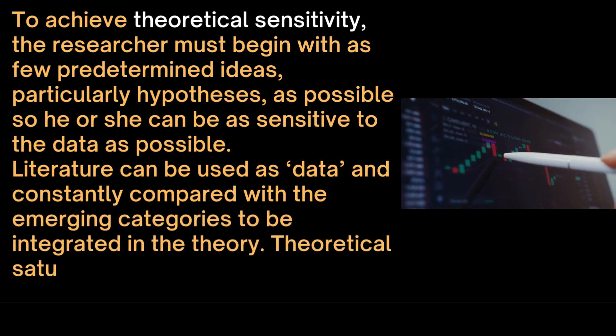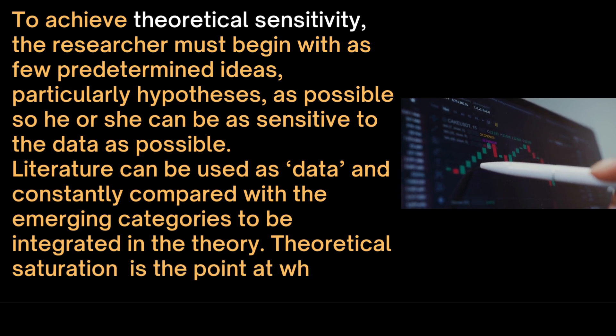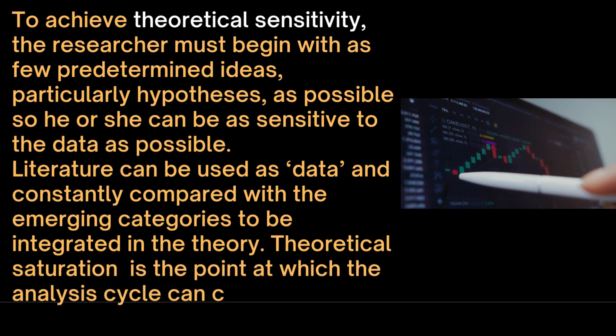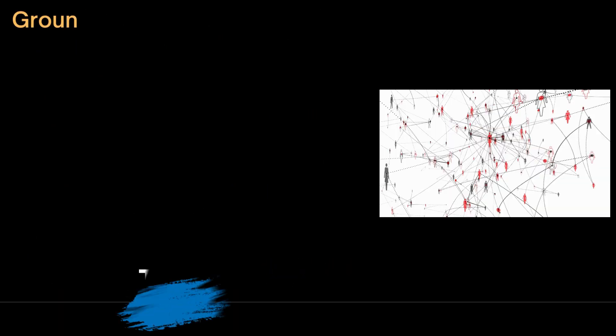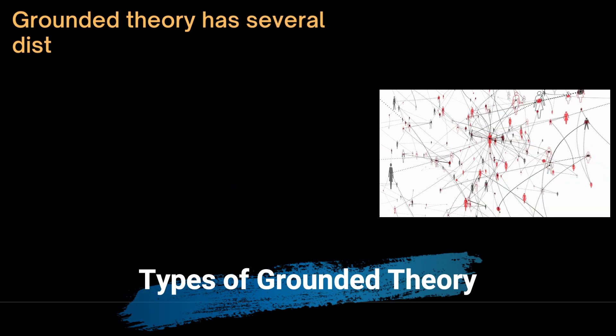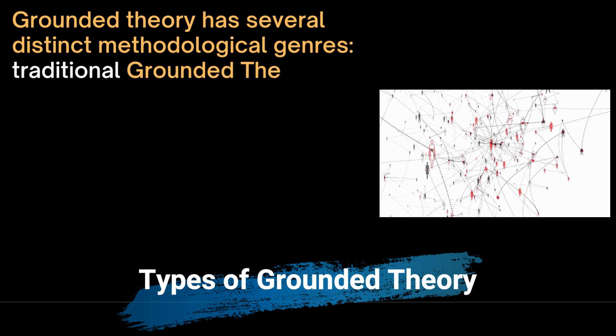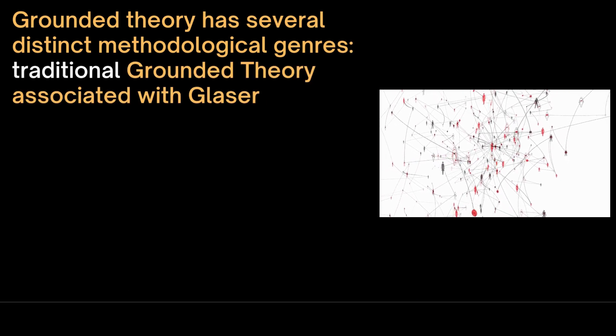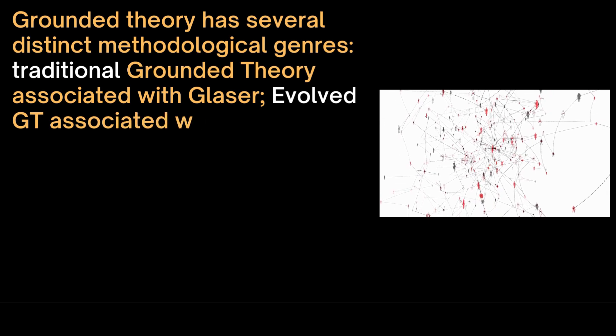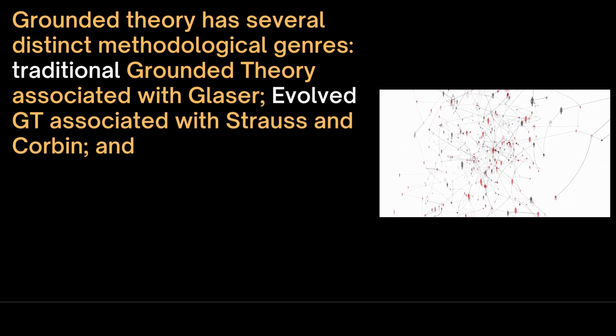Theoretical saturation is the point at which the analysis cycle can conclude. Grounded theory has several distinct methodological genres: traditional grounded theory which is associated with Glaser, and evolved grounded theory which is associated with Strauss and Corbin.